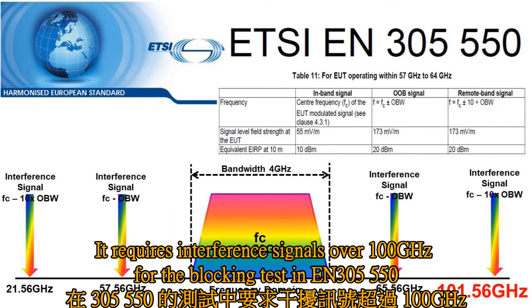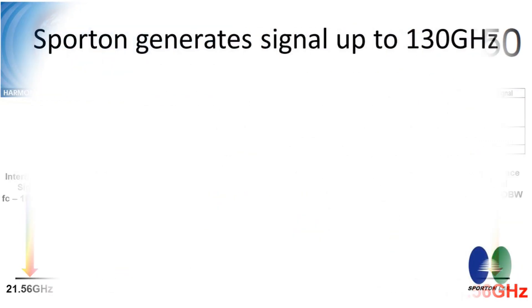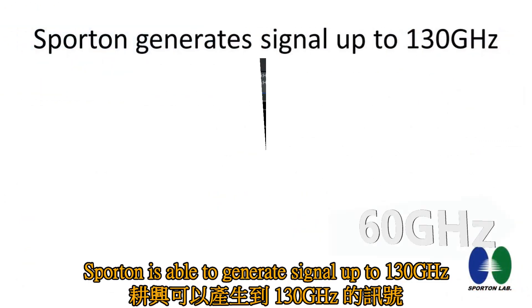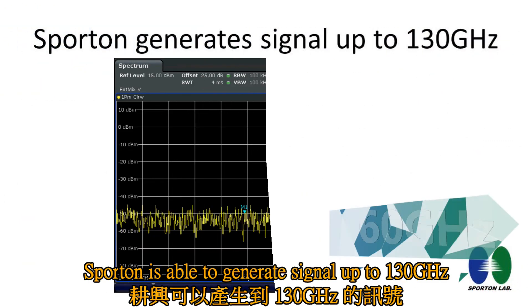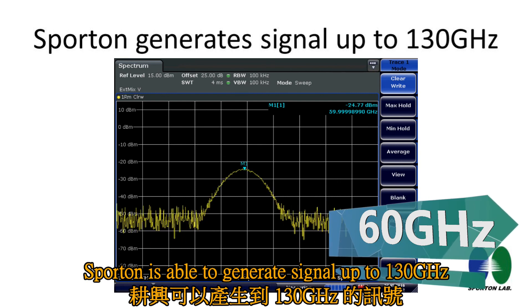EN305550 requires interference signals over 100GHz for the blocking test. Sporton is able to generate signals up to 130GHz.